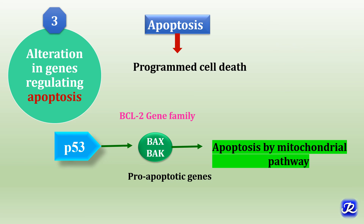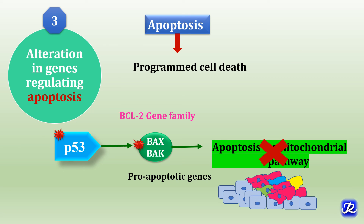The third mechanism of carcinogenesis is alteration in genes regulating apoptosis. Apoptosis is programmed cell death. When DNA damage is not repairable, the p53 gene induces pro-apoptotic BCL2 family genes such as BAX and BAK, which induce apoptosis via the mitochondrial pathway. When there is mutation in p53 and BAX/BAK genes, apoptosis cannot be induced, and the cell progresses with damaged DNA, leading to malignant transformation.